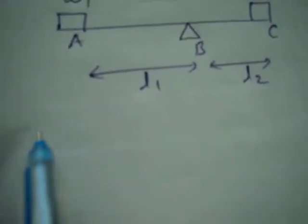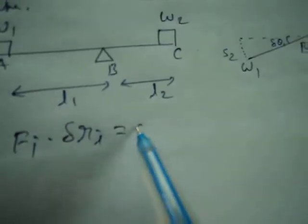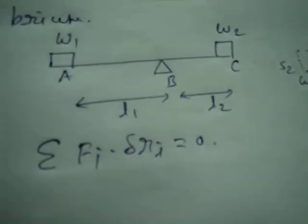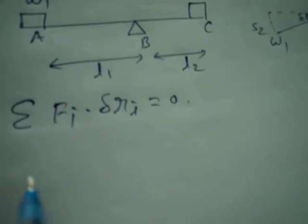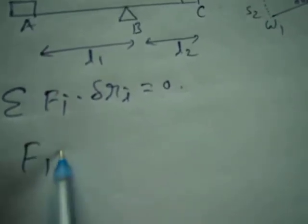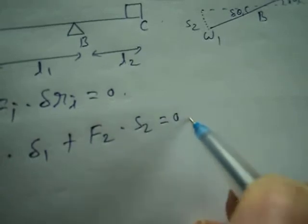According to the principle of virtual work, sum of the force into displacement is equal to the amount of virtual work. The total work is equal to 0. Here the force is only the gravitational force that is equal to weight. So F1 dot displacement S1 plus F2 into S2 equal to 0.